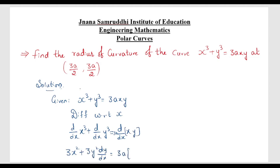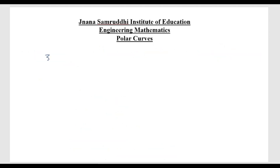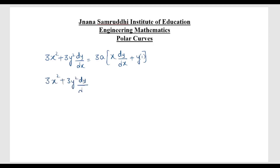d/dx of x³ will be 3x² plus d/dx of y³ will be 3y². Because it is an implicit function we write 3y² dy/dx. On the right side 3a is constant so we apply the product rule (uv rule): 3x² + 3y² dy/dx = 3a(x dy/dx + y · 1).